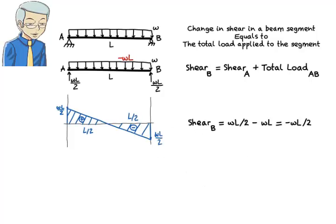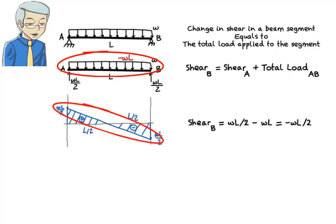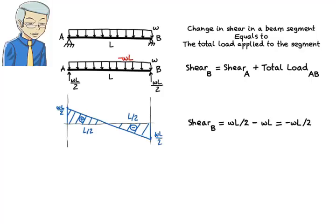A beam segment subjected to a uniformly distributed load carries a linearly varying shear. Concerning the shape of the diagram, the underlying rule is this: if we view the load diagram and the shear diagram as polynomials, then the degree of the shear polynomial is one higher than that of the load polynomial. Since the degree of the load polynomial in this example is zero — the load is constant — then the shear polynomial has a degree of one. Shear varies linearly in the beam. Note that the shear diagram consists of a positive region and a negative region, with shear being zero at the midpoint of the beam.